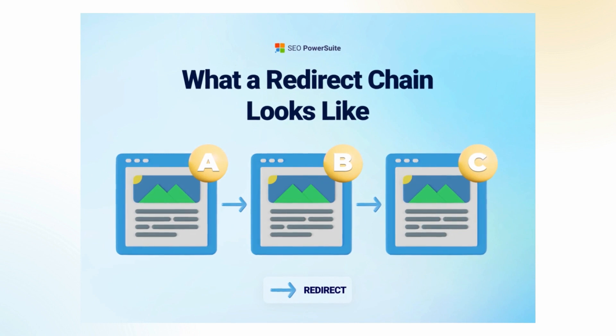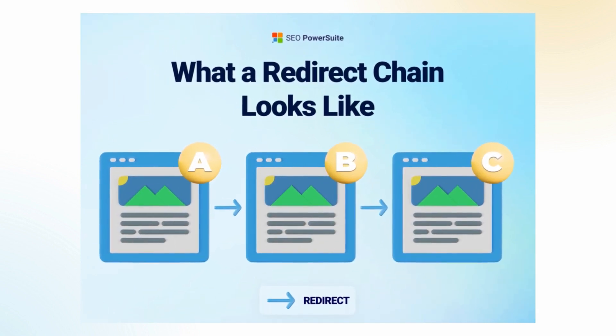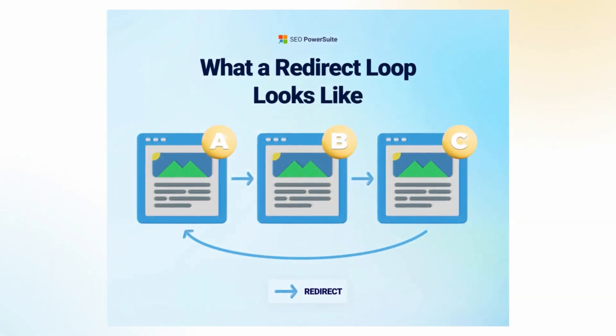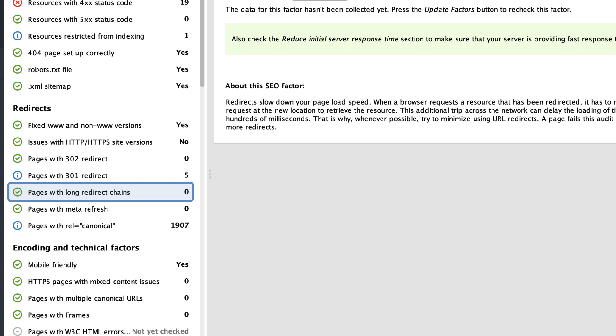If page 1 redirects to page 2 and this one in turn redirects to page 3 and so on, you have a redirect chain. And if a redirect chain ends up at the initial URL, it's a redirect loop. Redirect chains and loops are created accidentally and they are just a waste of resources such as crawl budget, link juice, or page speed. Fortunately, they can be easily detected by Website Auditor in the same redirects report. If the issue occurs, just redirect from the initial page to the destination page, passing all the intermediate hops. And if there is a loop, just remove all the redirects.